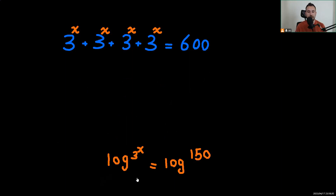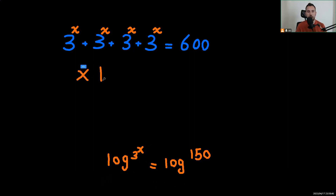We use logarithms because of the logarithm power rule, which lets us bring the exponent x down as a coefficient. So applying the power rule, we get x multiplied by logarithm of 3 equals logarithm of 150.